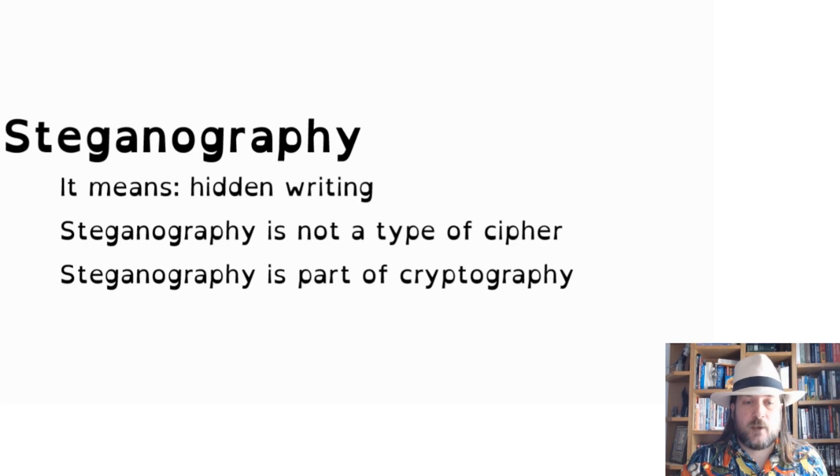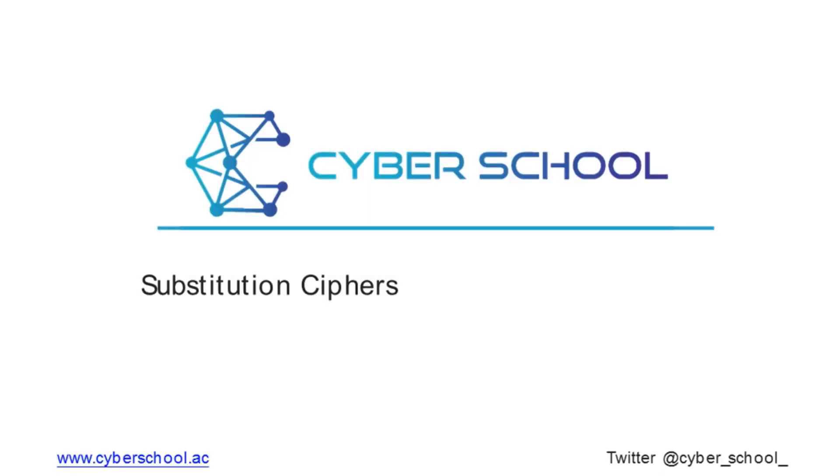The first cipher we're going to look at is called the Caesar cipher. Caesar was an ancient Roman emperor — we're not here for history, but anyone running an empire like Rome needs to send secret messages to other important people. He wasn't the first to use what we now call a substitution cipher, but his is the first where we know how it worked.